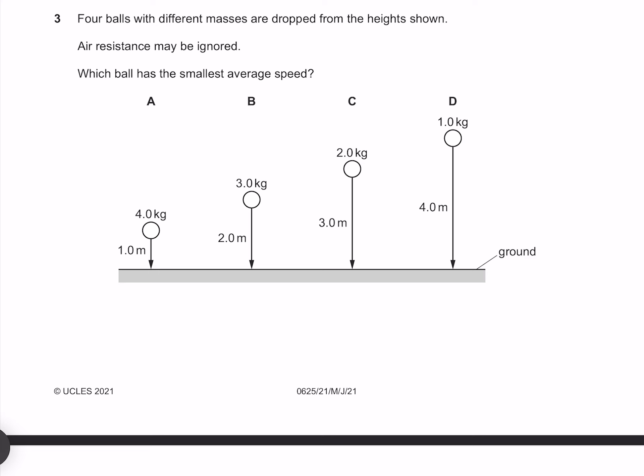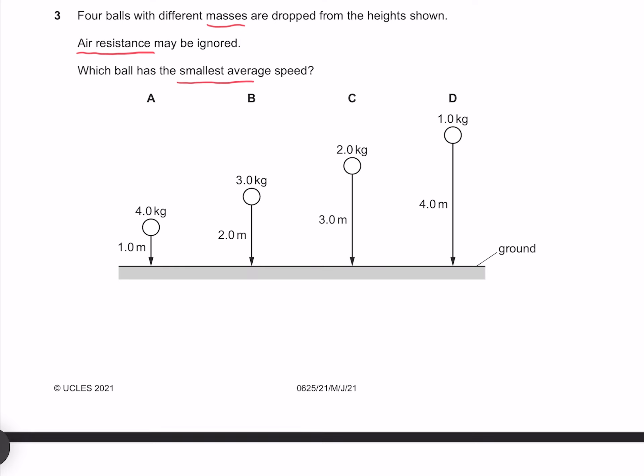Four balls with different masses are dropped from heights shown. Air resistance may be ignored. Which ball has the smallest average speed? If air resistance can be ignored then the balls will fall with the same gravitational acceleration regardless of their mass. The longer the distance the longer they accelerate for and therefore the larger the speed. We are asked for the smallest average speed, which is going to be achieved by A.